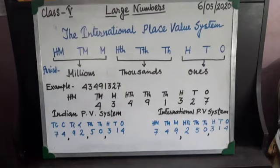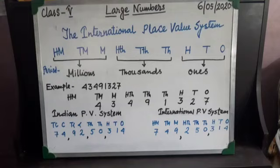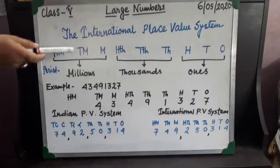Now we are going to learn about another important place value system — the international place value system. This system is used in many countries all over the world. According to this system, the place values are: ones, tens, hundreds, thousands, ten thousands, hundred thousands, then million, ten million, and hundred million. If we divide these into periods, hundred million, ten million, and million come in the millions period.